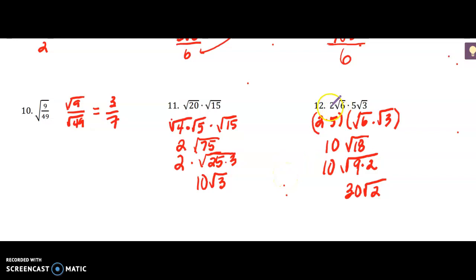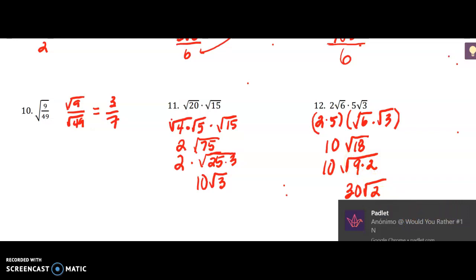In number 12, when we multiply, think about combining or grouping like terms. I'm using the commutative property to do a little reorganizing. I did 2 times 5, which is 10, and then multiplied my radicals: 6 times 3 is 18. Then I simplify 18 into 9 times 2, the square root of 9 is 3, and 3 times 10 is 30. So my final answer is 30 square roots of 2.